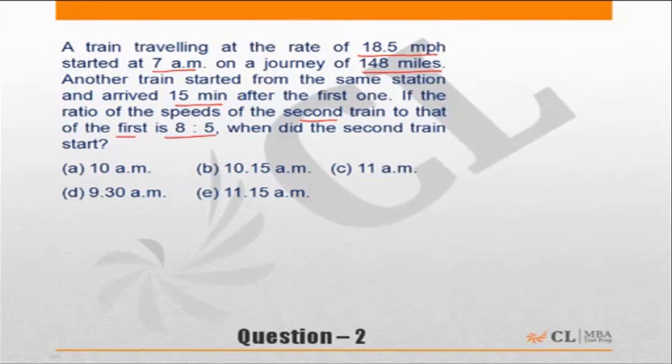In this question, a train is moving from a particular station to another station - let's say from station A to station B. It starts at 7 AM. The distance between the two locations is 148 miles.